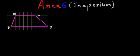Hi, in today's video we are going to learn how to find the area of a trapezium. A trapezium is a quadrilateral where one pair of opposite sides are parallel. They need not be equal — they are parallel.